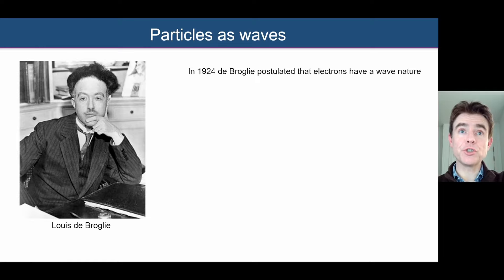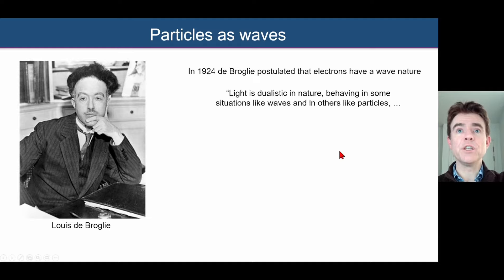So we'll start with a French physicist called Louis de Broglie. In 1924, he postulated that electrons have a wave nature.